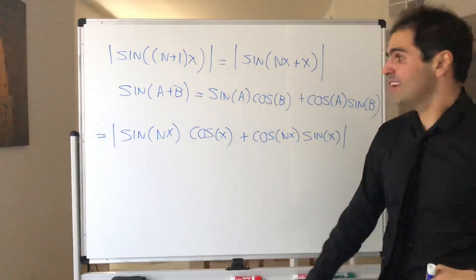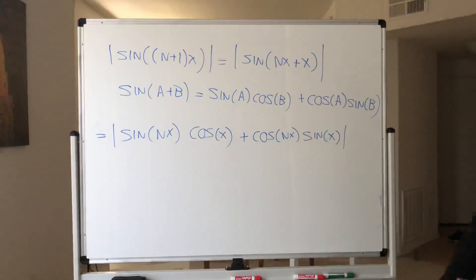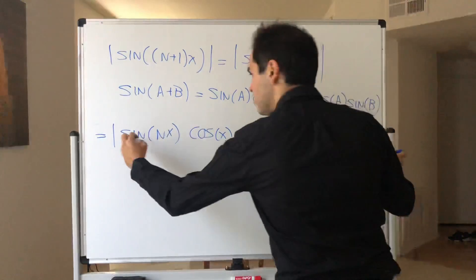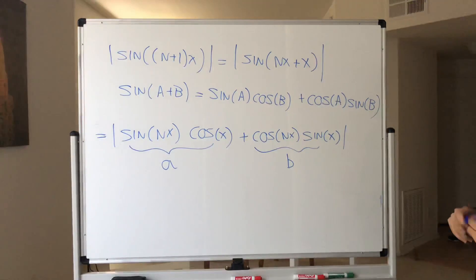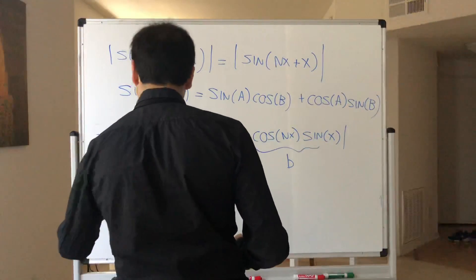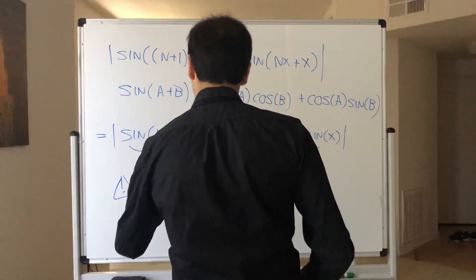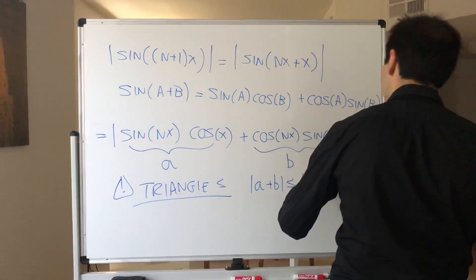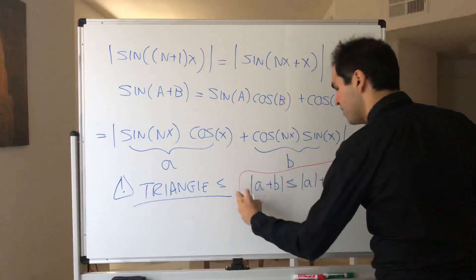So that's very good. Now what we would like to do is extract something useful from this identity. We would like an inequality involving sine of nx. Notice this is absolute value of a plus b. So it would be nice to estimate the absolute value of a plus b — and indeed we can, using something called the triangle inequality, which is super important. We'll probably use it a hundred times in this course.